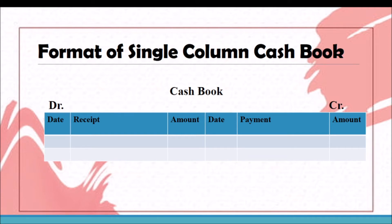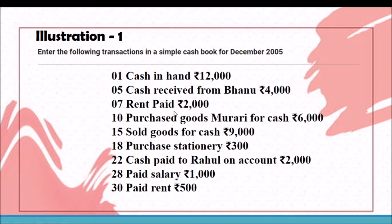All cash receipts are recorded on the debit side and cash payments on the credit side. From the following transactions, we have to prepare the single column cash book. Cash in hand shows the opening balance. Cash received from Banu will be recorded on the debit side. Rent paid will be recorded on the credit side. Purchased goods from Murari for cash $6,000 is recorded on the credit side — it is an expense. Sold goods for cash is a receipt recorded on the debit side. Purchased stationery is an expense shown on the credit side. Cash paid to Rahu $2,000 will be recorded on the credit side. Paid salary and paid rent — all shown on the credit side.